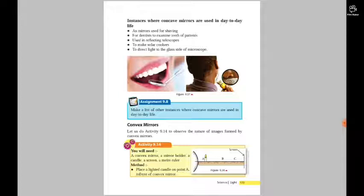For Activity 9.14, you will need a convex mirror, a mirror holder, a candle, a screen, and a meter ruler. You have to keep this like the before part. In the last part I told you about concave mirrors, and this is similar.